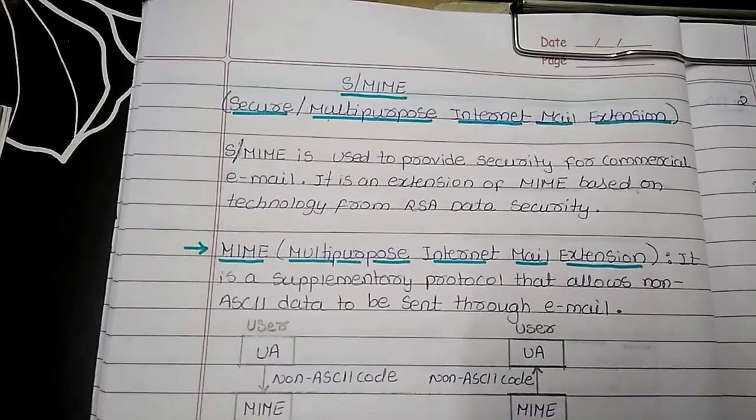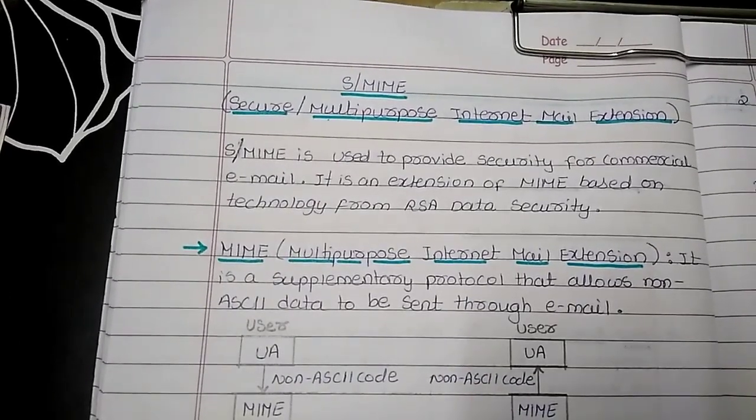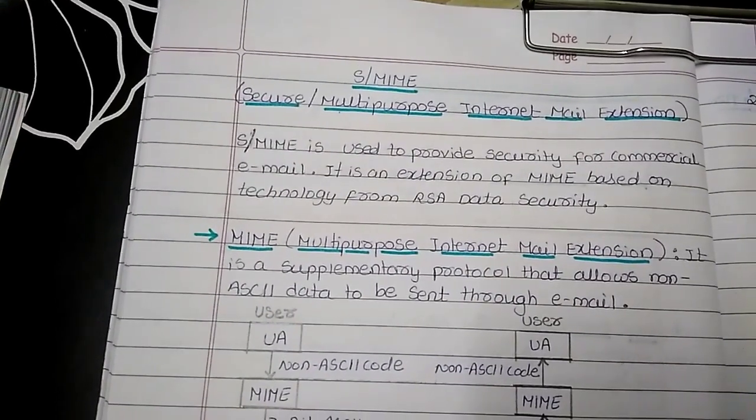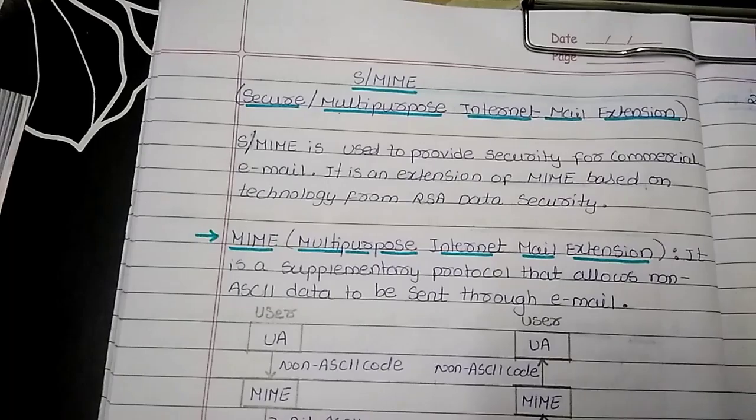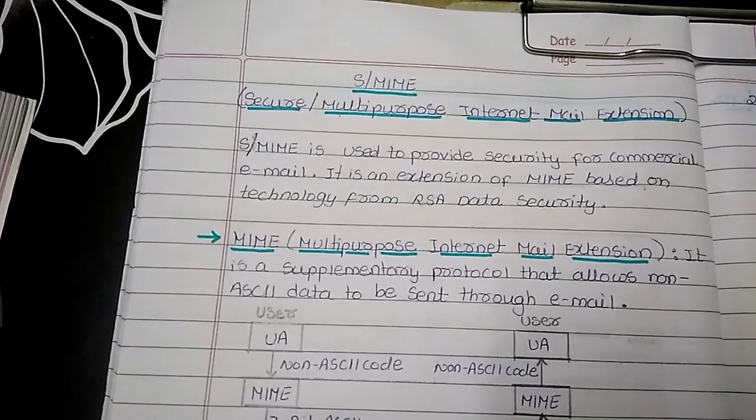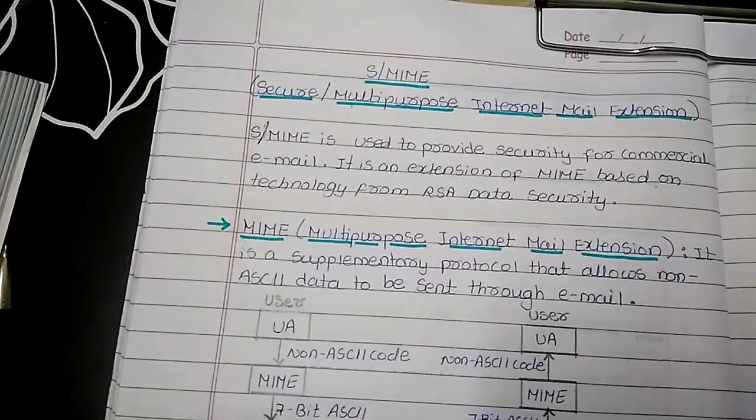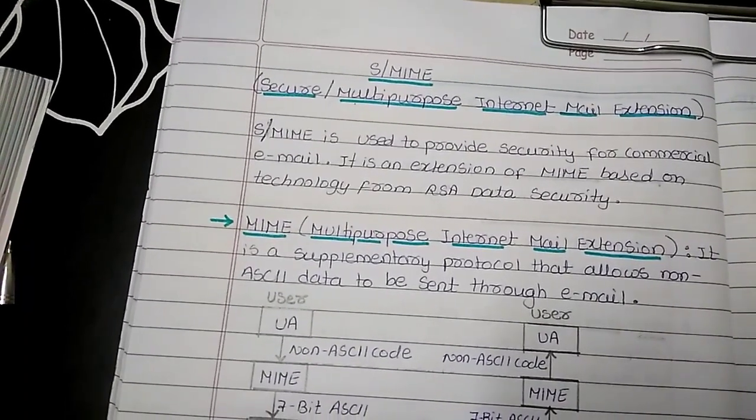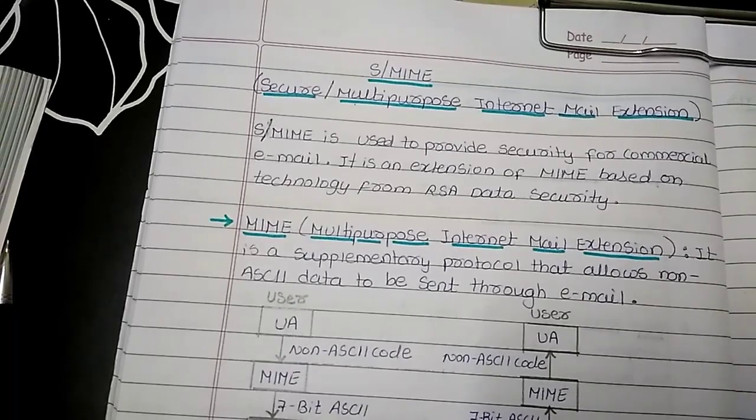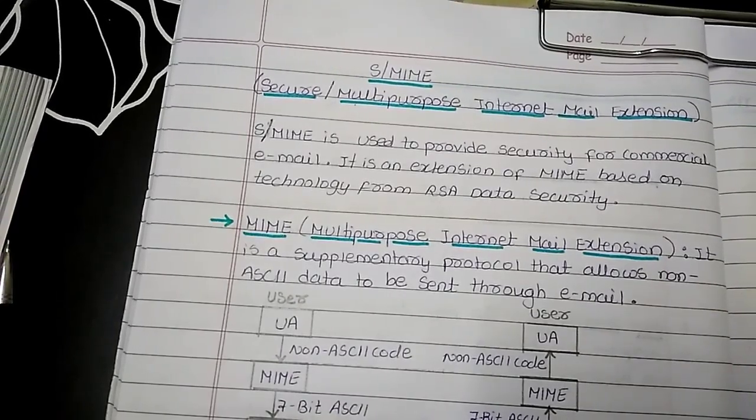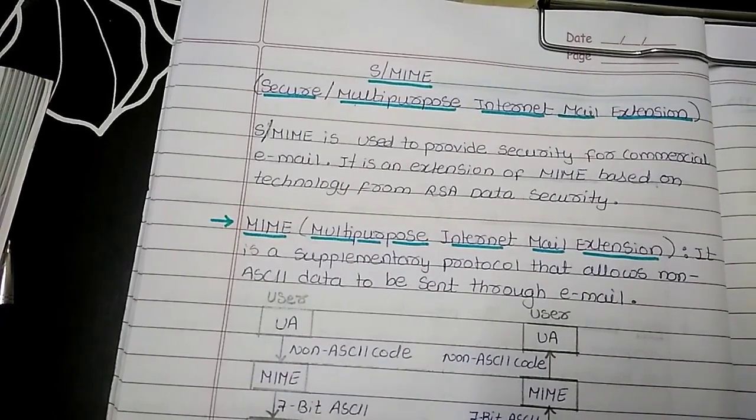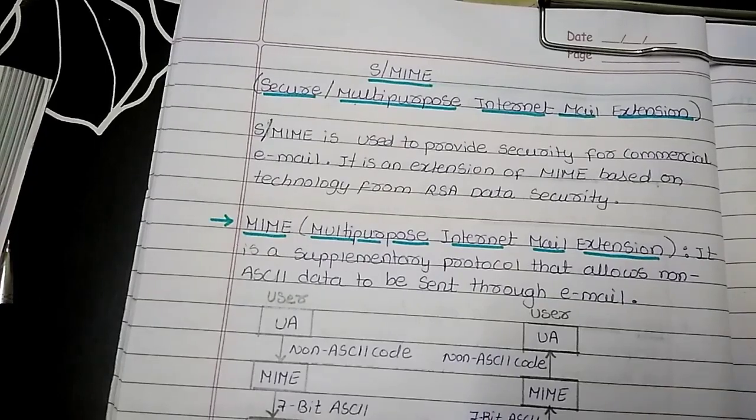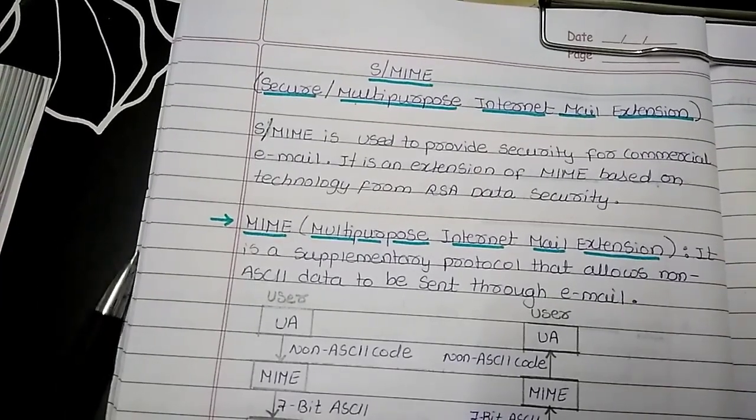Hello everyone, now we will see the concept of secure multipurpose internet mail extension or simply SMIME. This SMIME is used to provide security for commercial emails and is an extension of MIME based on technology from RSA data security. Before starting with SMIME, let us understand what exactly this MIME is.